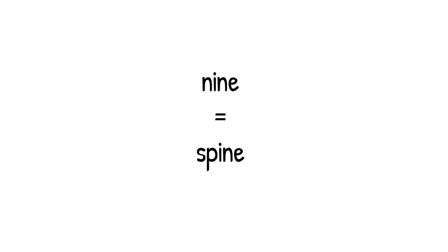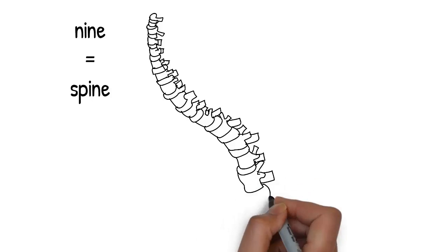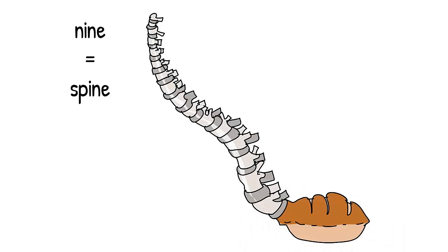The leavened bread keeps rising, but starts to transform shape as it rises, and turns into a giant spine. Spine rhymes with 9.